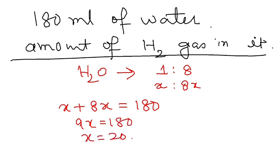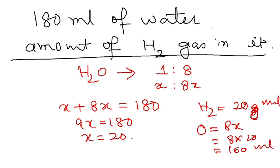9X equals 180, so my X is 20. So hydrogen, how much I have? 20 grams. And how much will be oxygen? 8X, right? So 180 minus 20 is 160. Not grams, ml. Question is given in ml, so 160 ml.